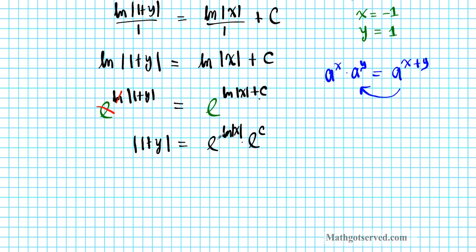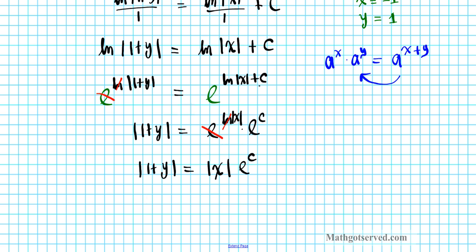On the right side, this e and ln inverses, they cancel out. So we have |1 + y| = |x| times e^c. So we can basically just look for e^c and put it back here, and we can solve the problem that way. So let's see. How do we find e^c? First of all, we have absolute value here and absolute value here. How do we get rid of that? We have to write it as ±(1 + y) = ±x times e^c. Now, how do we know if it's positive or negative? We are going to go back to our points.